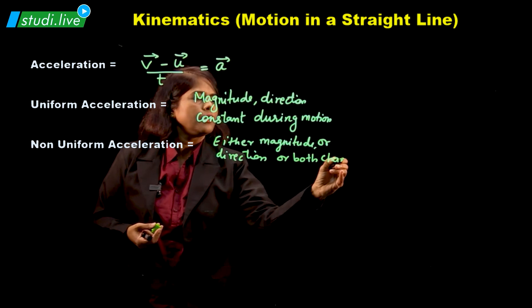Rate of change of velocity is called acceleration. When we say rate, it means upon time. You can also say change in velocity per unit time — it means the same. Now acceleration also requires magnitude as well as direction. So can you tell me whether it is a scalar or vector? Of course it is a vector quantity.